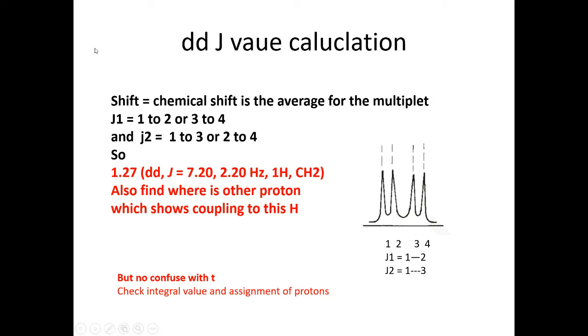So we write down for this doublet of doublet the two J values. If the J values are the same, like 7.21 and 7.20 Hz, then we write it as we discussed in a separate lesson, which has an apparent triplet having different chemical shifts of two protons.